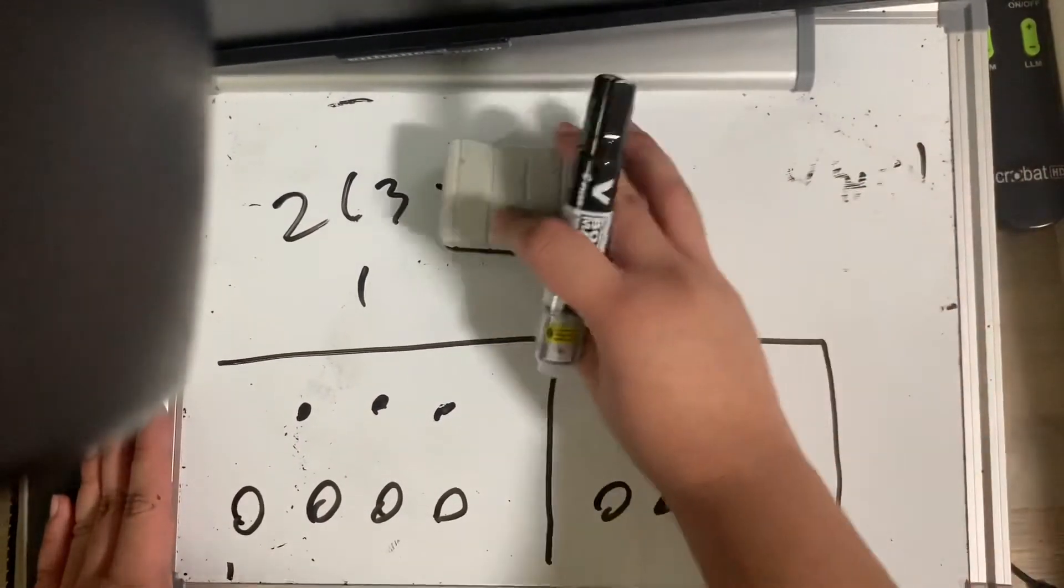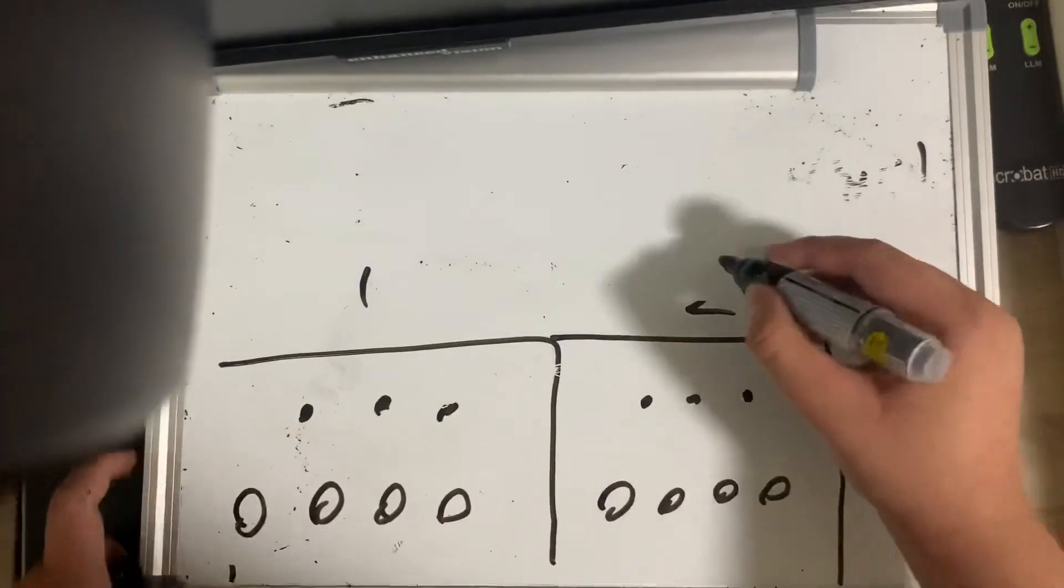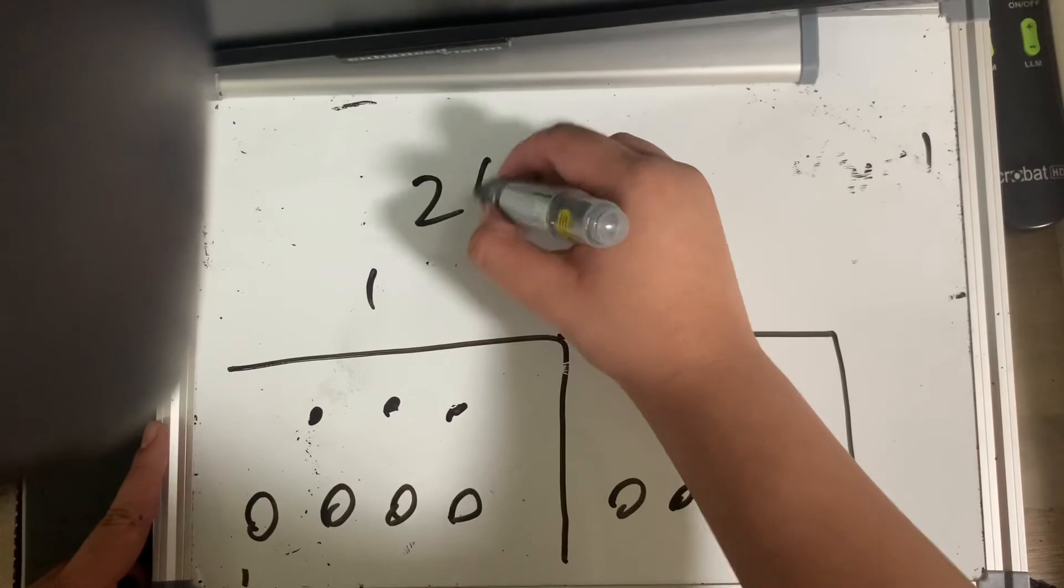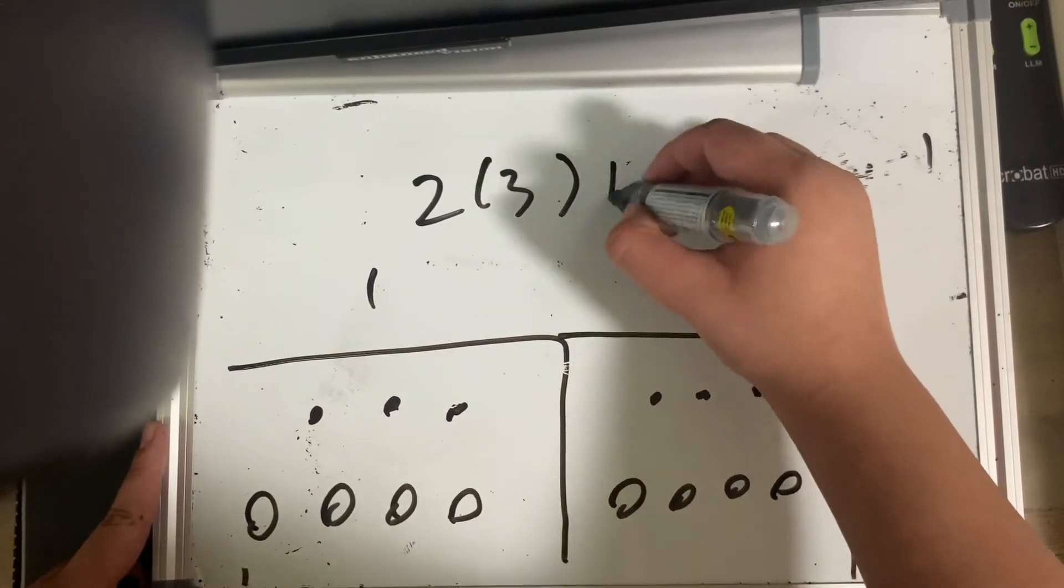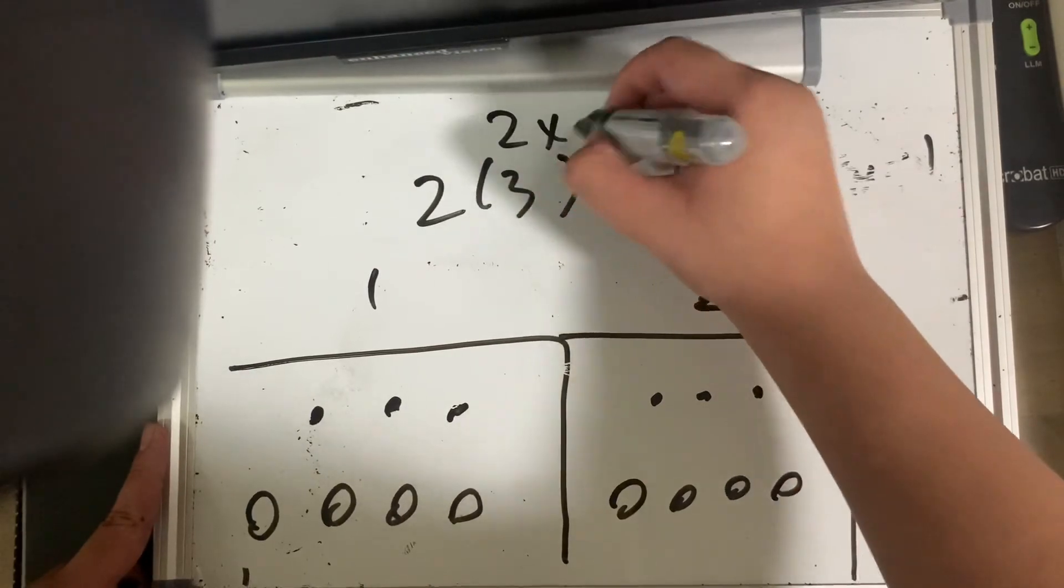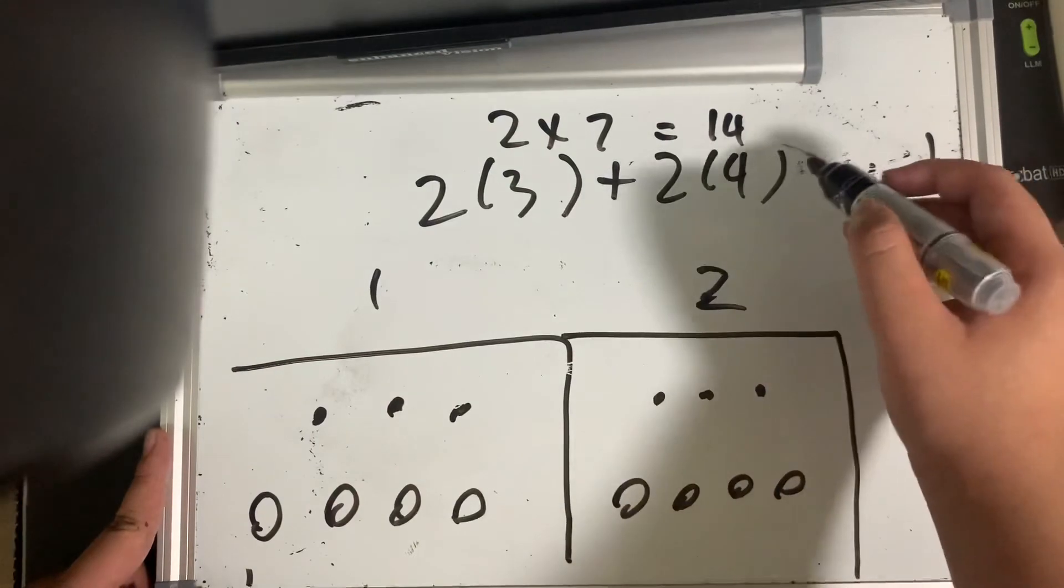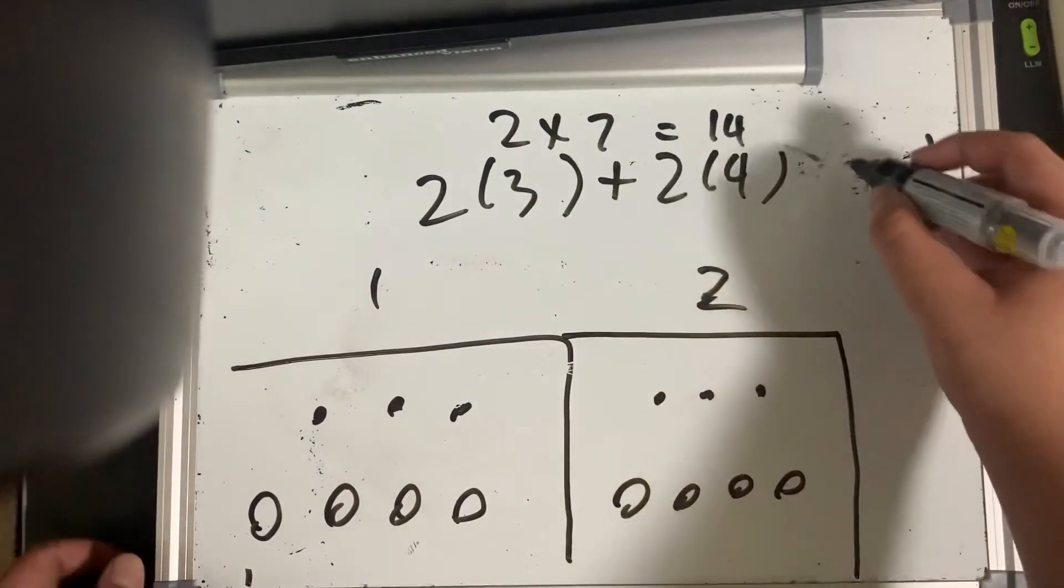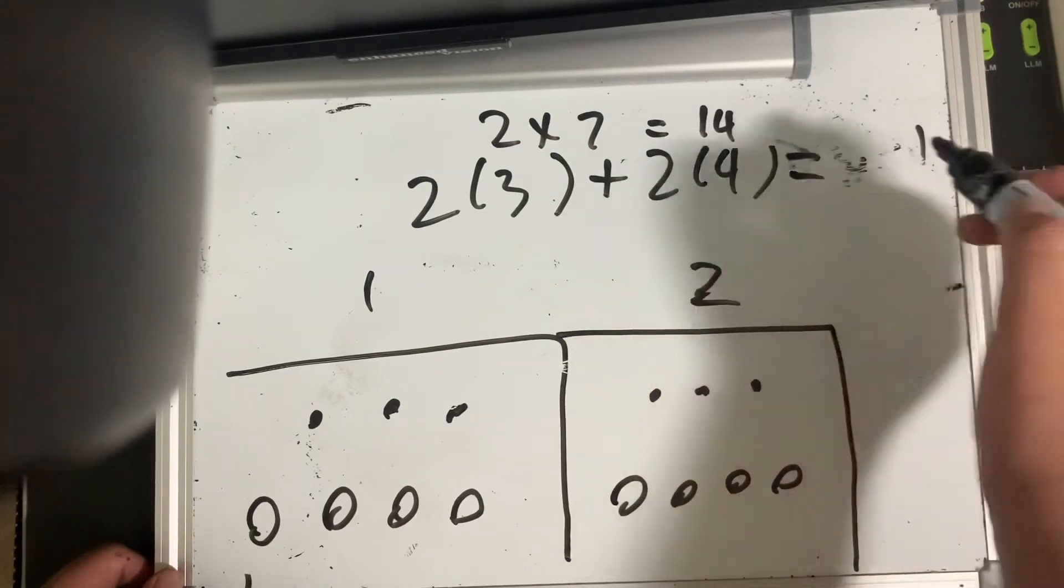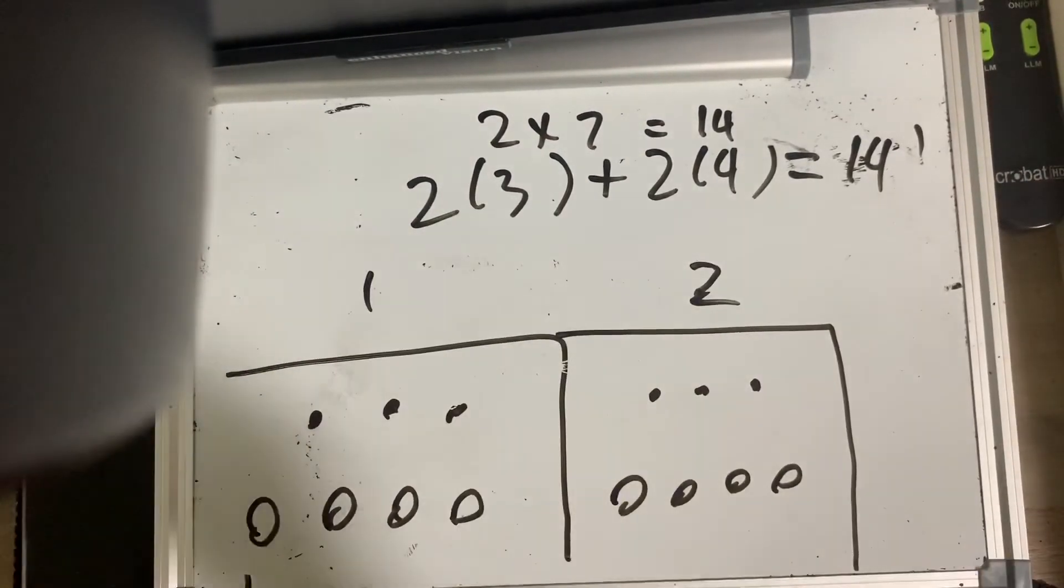Thus, visually and algebraically, the distributive property can be proven. So, just to make sure, to see whether this does still hold up. As we saw, the original one was 2 times 7 is equal to 14. But now, is the distributive property applied version the same? Well, 2 times 3 is 6. And 2 times 4 is 8. 6 plus 8 is 14. So, it still applies. So, it works.